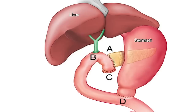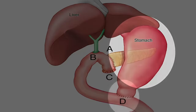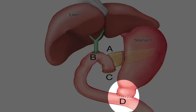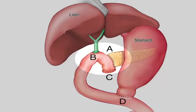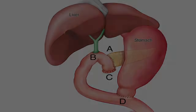The end result is: food goes into the stomach and back into the intestine, pancreatic juice and bile get into the intestine, all come together, and you return to having normal absorption.